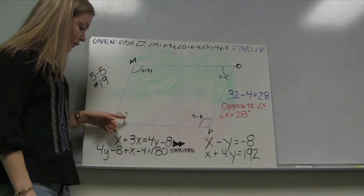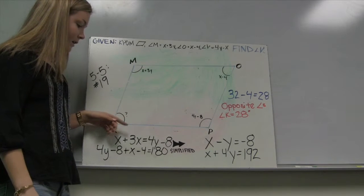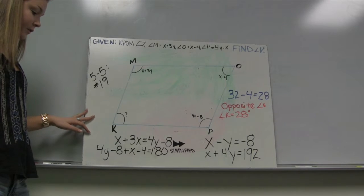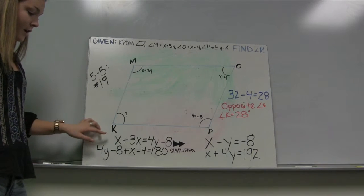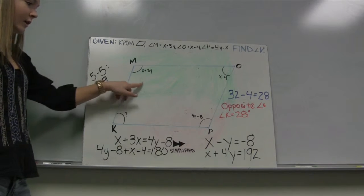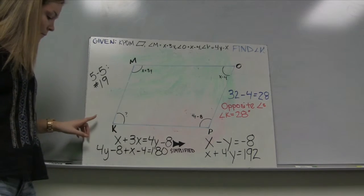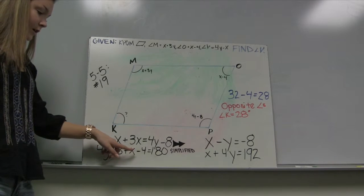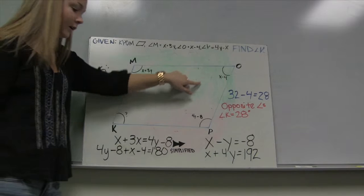We were supposed to find the missing value for the measure of angle K, and to do that we had to make two equations to find the two variables. Our first equation was x plus 3y equals 4y minus 8 because these two angles are congruent in a parallelogram. And our second equation was that 4y minus 8 plus x minus 4 equals 180 because they're supplementary angles.